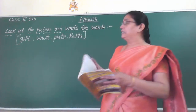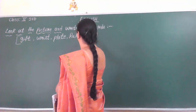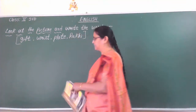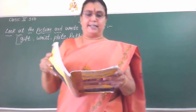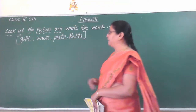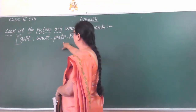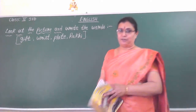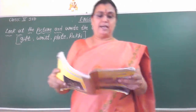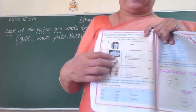What will we learn today? We need to look at the picture and write the words provided in the bracket. The words given are: gift, this, play — write it. Four words are given, and there are four pictures here.